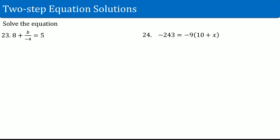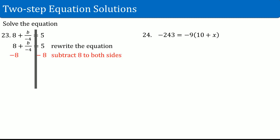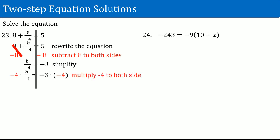Number twenty-three: 8 plus b over negative 4 equals 5. Rewrite the equation and draw a line straight down. What is attached to the variable: an 8 as well as a divide by negative 4. Deal with the 8 first — subtract 8 from both sides. Eight subtract 8 cancels out, leaving b divided by negative 4. On the right-hand side, 5 minus 8 is negative 3. The inverse of divide by negative 4 is multiply by negative 4. That cancels out, leaving just b. On the right-hand side, negative 3 times negative 4 becomes positive 12.